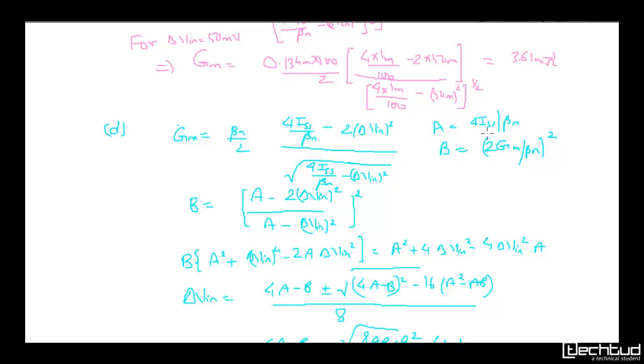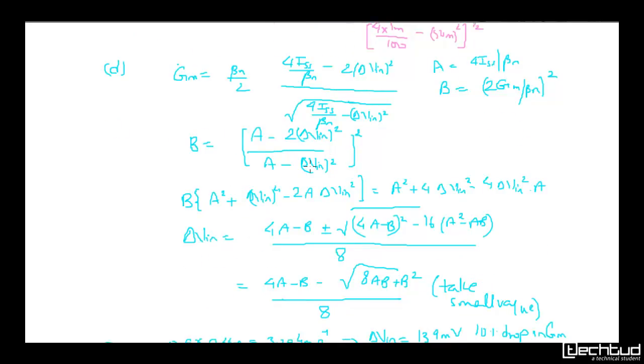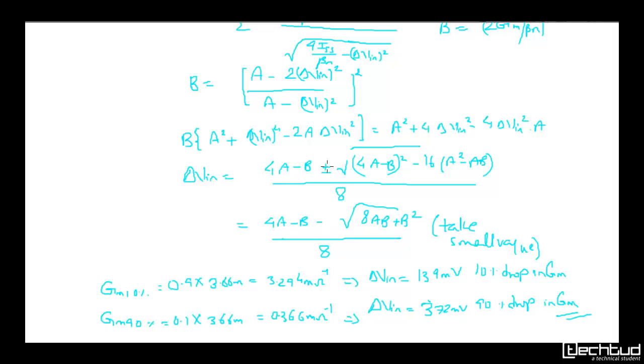Let's substitute A = 4*ISS/β and B² = (2*gm/β)². Then B² = (A - 2*δVin²)/(A - δVin²). Rearranging: B²(A - δVin²) = A - 2*δVin². Solving for δVin: δVin = sqrt[(A - B²A)/(2 - B²)]. Since δVin is a small quantity, we take the minus sign. Now we can substitute the gm values for the two cases and calculate A and B.